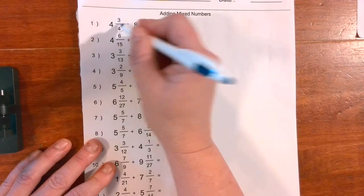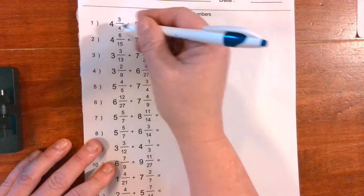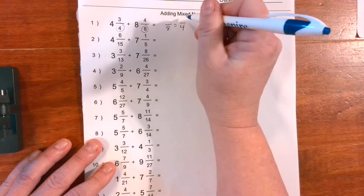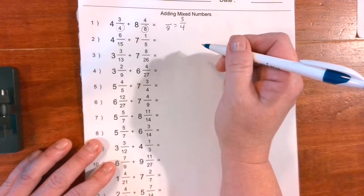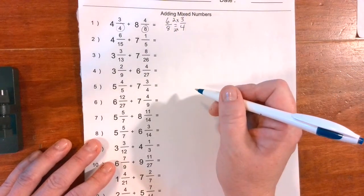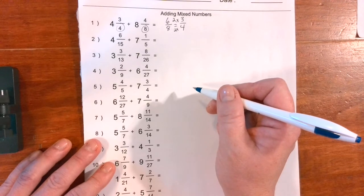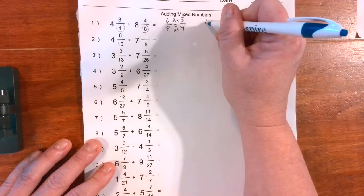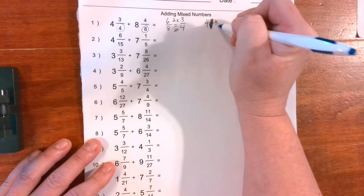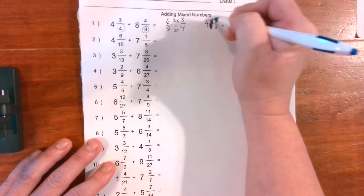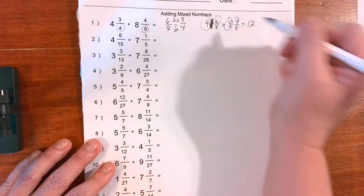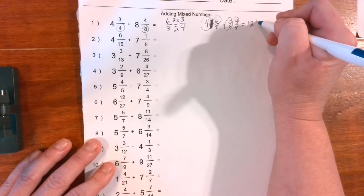So here we go. We don't have common denominators, so I'm going to go ahead and change, make equivalent fractions with eighths. Four times what is eight? Two. If I do it to the bottom, I have to do it to the top. Three times two is six. So we have 4 and 6/8 plus 8 and 4/8. So I'm going to go ahead and rewrite it over here so you can see: 4 and 6/8 plus 8 and 4/8. We're going to add our whole numbers first. Eight plus four is twelve. We're going to add our numerators just like we did previously. Six plus four is 10/8.